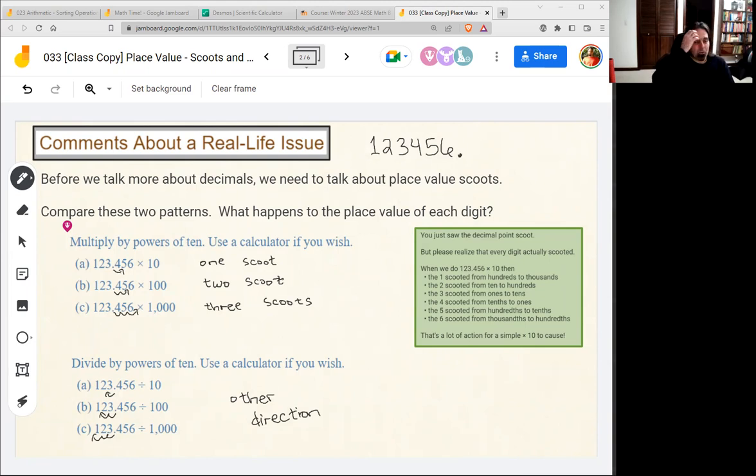Here is a review of what we just did. If I multiply by 10 or 100 or 1,000, it scoots the decimal point 1, 2, or 3. And it's to the right because it's getting bigger. If I had $123.456 and I earned that 10 times, I'd have more money. So times 10 makes things bigger. That's the bigger direction.